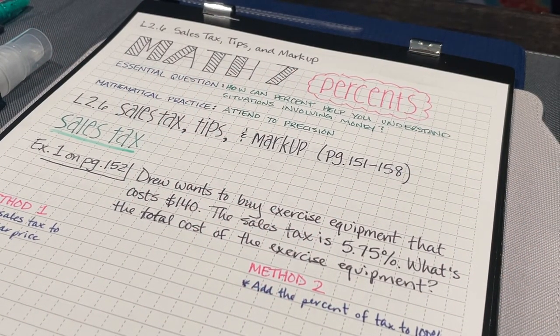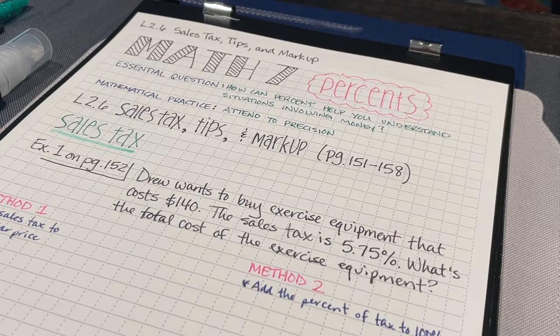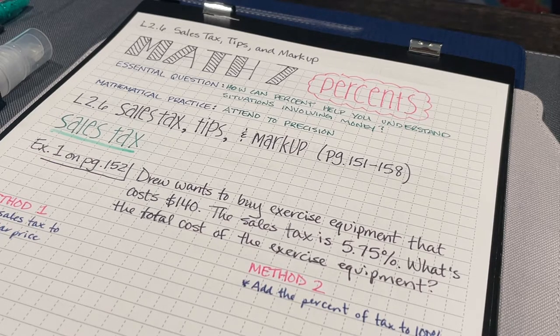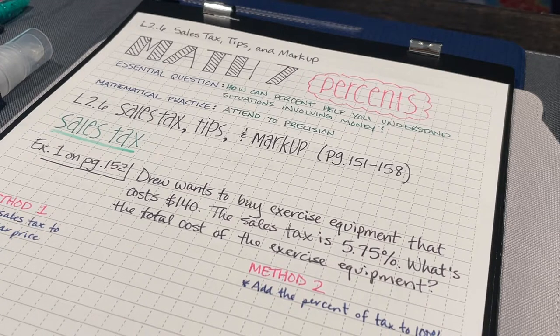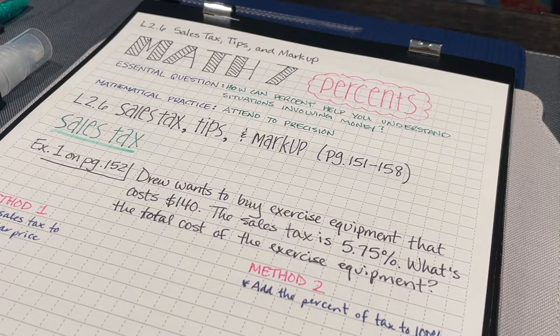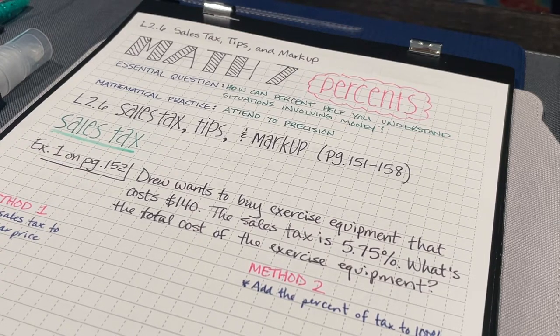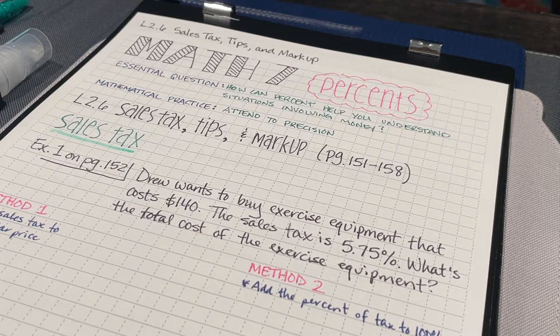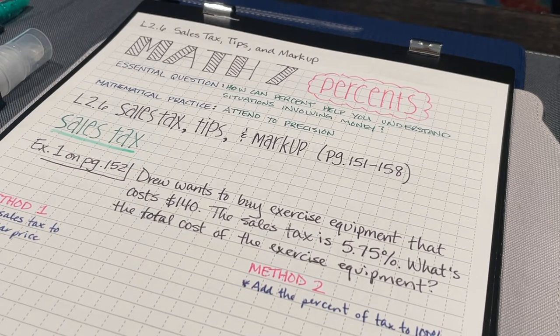So here we are in Lesson 2.6, Sales, Tax, Tips, and Markups. Once again, let's keep our focus on the essential question. How can percent help me understand situations involving money? Here's going to be some very specific examples about how you could then answer that essential question.